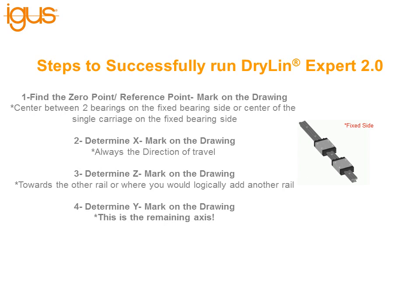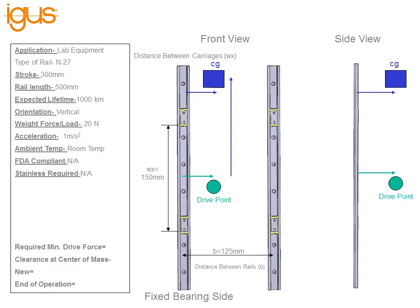There are a few steps to successfully run Dryland Expert 2.0. The first thing we want to do is find the zero point or reference point and mark it on the print. The reference point is centered between two bearings on the fixed bearing side, or the center of the single carriage on the fixed bearing side. Next, mark down the X direction, followed by Z — which is towards the other rail or where you would logically add another rail — and the remaining dimension is Y.